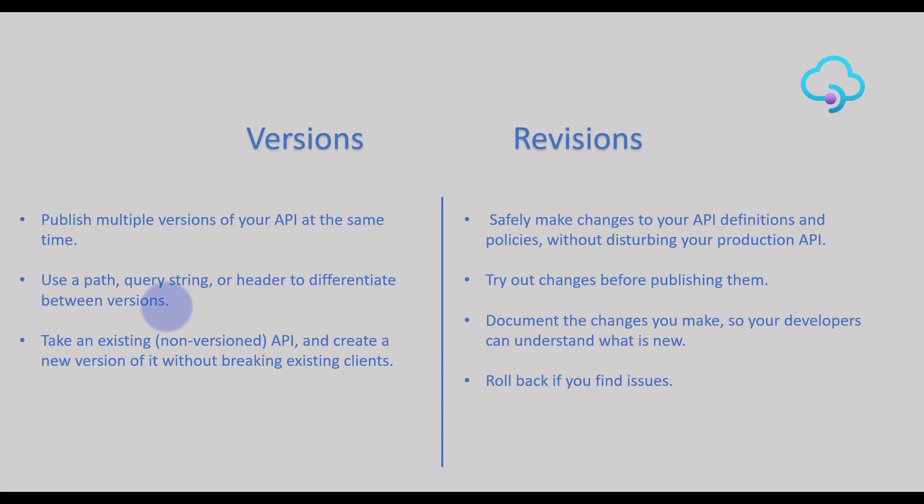While defining the revision, you can create multiple revisions to the same API and select a particular revision as an online revision and the others as offline. By providing the URL parameter with a specific revision value, developers or users can test the functionality, and once they are happy with the changes they can publish that particular revision as an online revision.